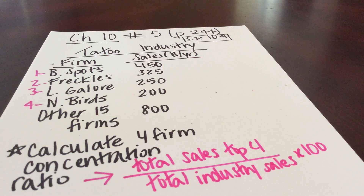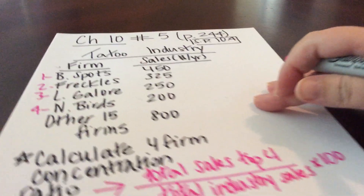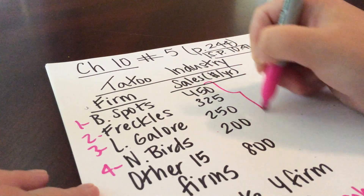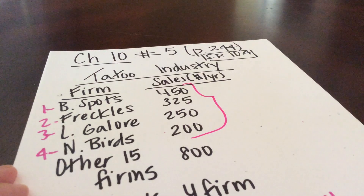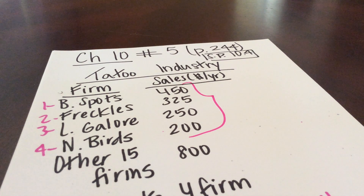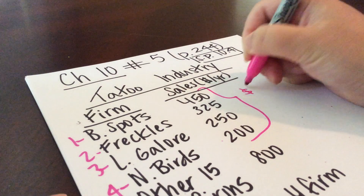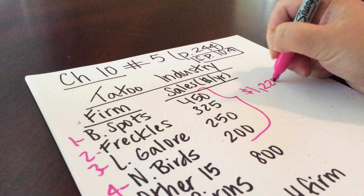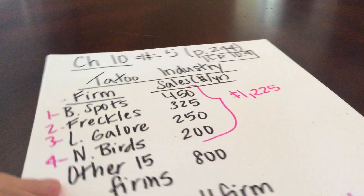Step one: we need to calculate total sales for the top four firms. So this would be $450 plus $325 plus $250 plus $200, which comes out to equal $1,225.